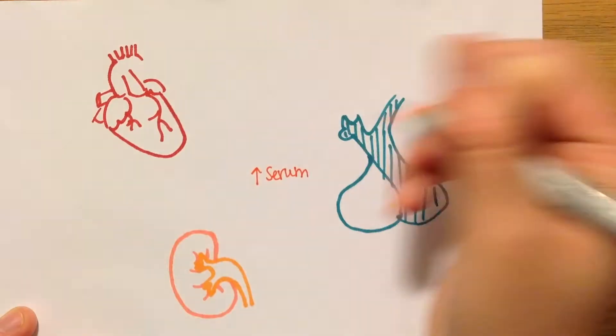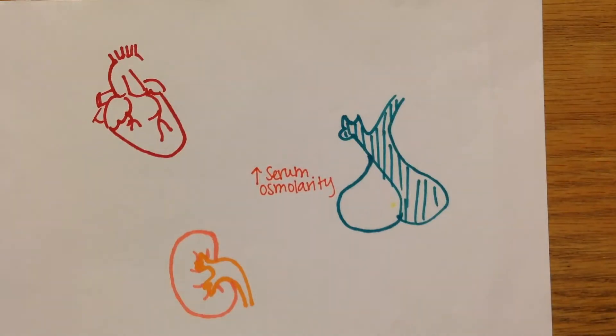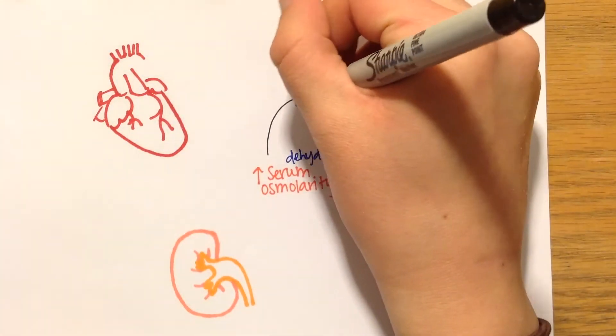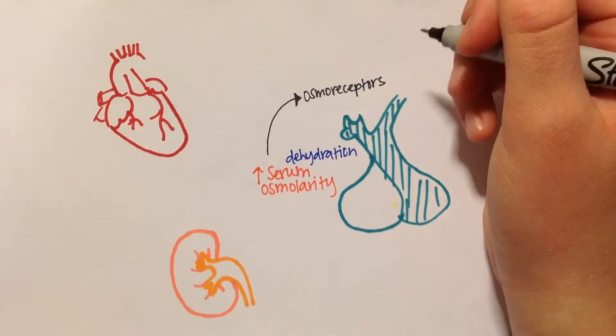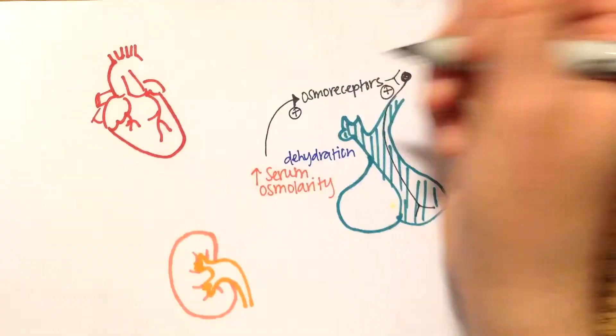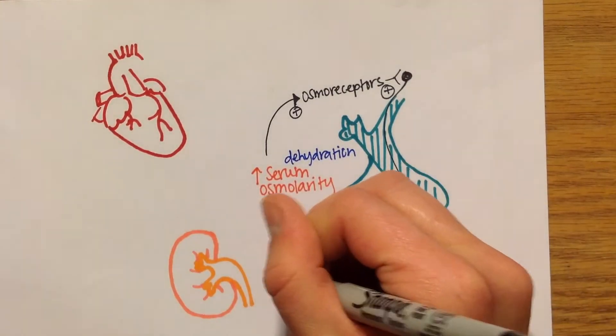Now I'm going to narrow in on vasopressin and its role in regulating body fluid after acute hemorrhage and dehydration. Vasopressin has two roles. One, it retains water in the body. And two, it constricts blood vessels. During dehydration, there is a high serum osmolarity. The osmoreceptors, which are mainly found on the hypothalamus, will detect this change and will stimulate the release of vasopressin from the hypothalamus. This will act on the kidney to retain water and restore osmolarity.